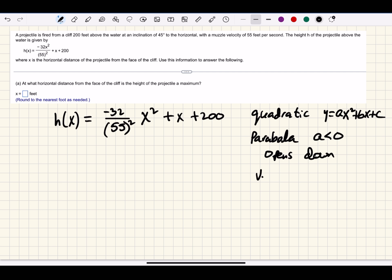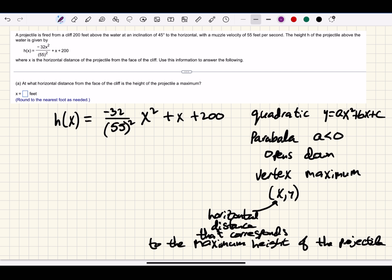That means that the vertex would be a maximum point. If we find the xy coordinates of the vertex, then the x coordinate would be the horizontal distance that corresponds to the maximum height of the projectile. The y coordinate would correspond to that maximum height reached by the projectile. So we need to find the vertex. There are multiple ways to find the vertex for a parabola.